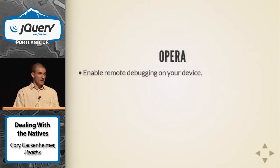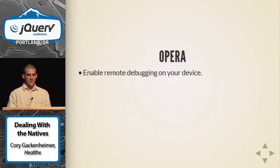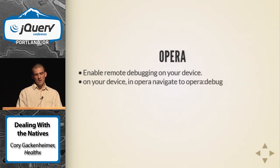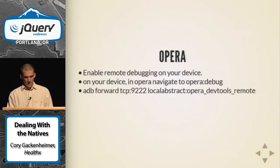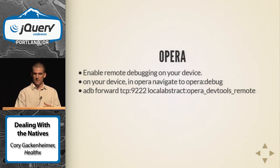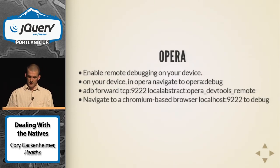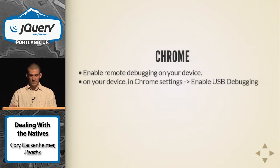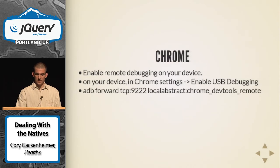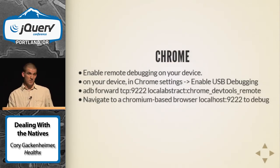For Opera on Android: enable remote debugging on your device, navigate to opera:debug, plug in your device, forward the port, and navigate to Opera DevTools remote in a Chromium-based browser. For Chrome it's the same story — enable it in settings, ADB forward the port, and navigate in a Chromium browser. Firefox: enable remote debugging, go to about:config, set devtools.debugger.forceLocal to false and devtools.debugger.remoteEnabled to true, forward the port, and connect in the web developer tools.